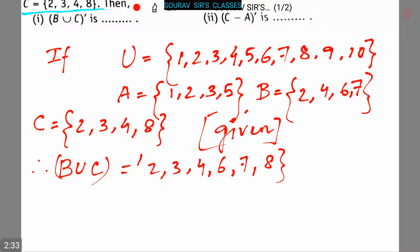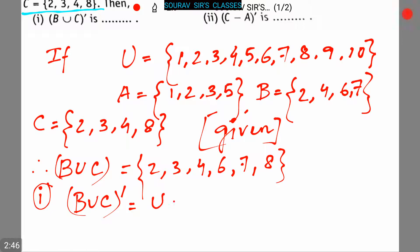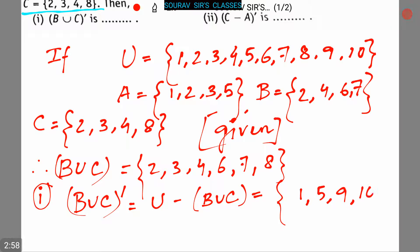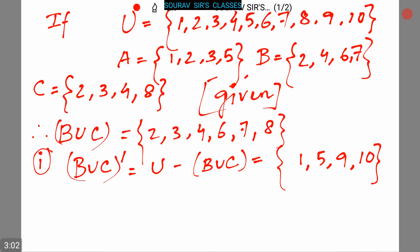From this we can see that (B∪C)' — the complement of B union C — is equal to {1, 5, 9, 10}.